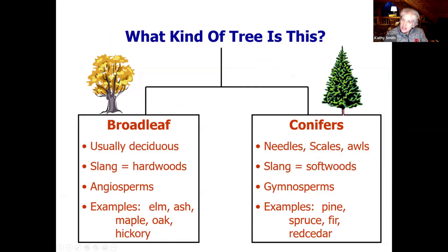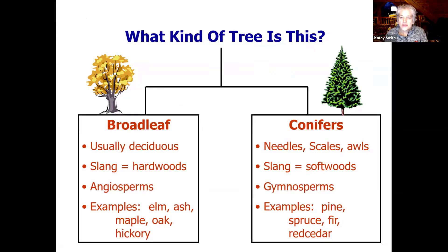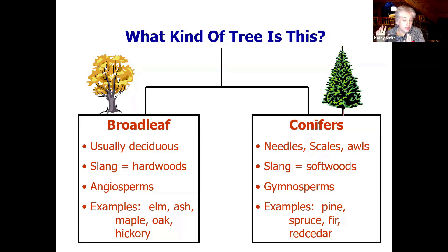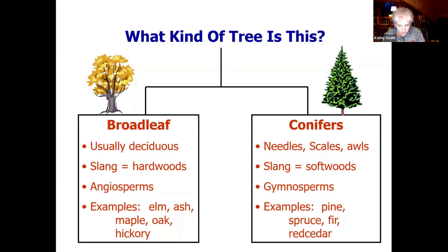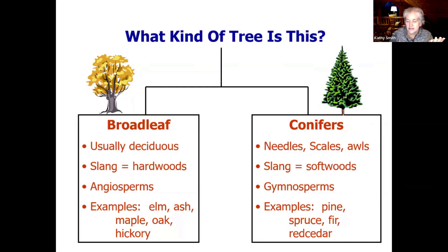In the day-long tree ID class, you start with: what kind of tree is it? Is it a broadleaf that has leaves that fall off in the fall? Or is it a conifer that has some kind of needle or scale? Some folks would classify as evergreen, but not all conifers are evergreen — meaning they don't all keep their needles year-round. That's your first question: broadleaf that loses its leaves, or conifer with needles or scales?